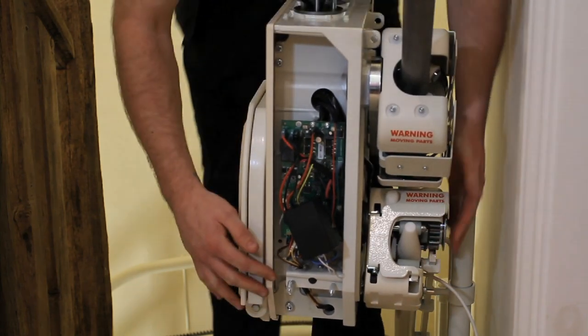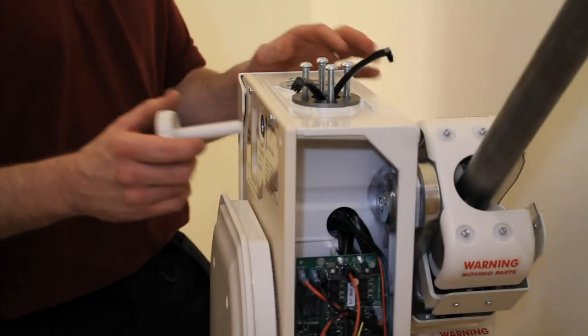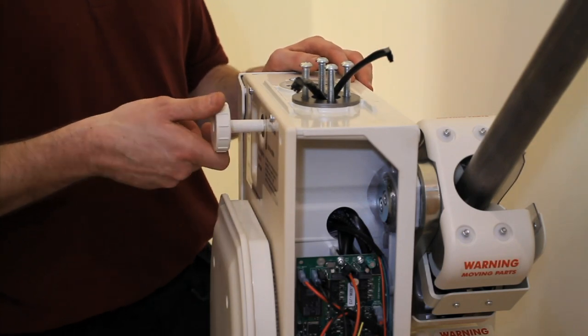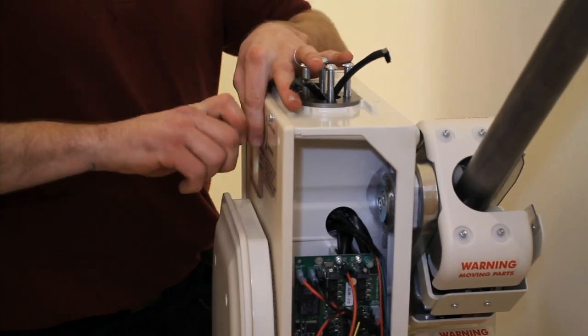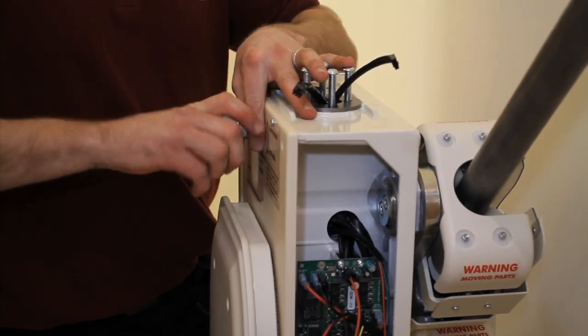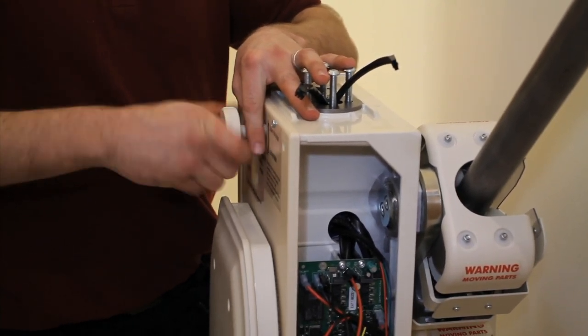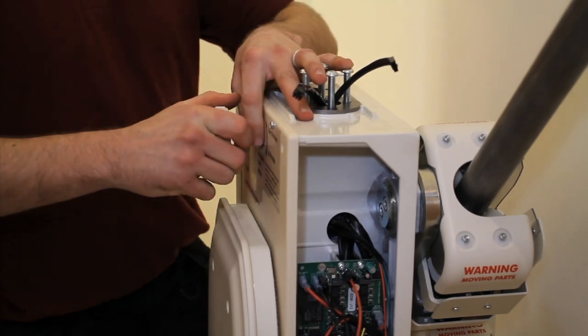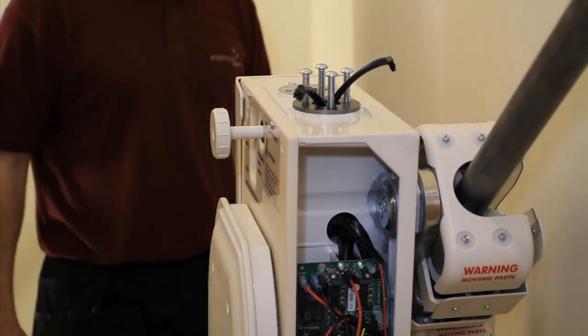Next you need to hand wind the carriage onto the rail correctly. Before you begin this, ensure the isolator switch is off. Insert the hand winder into the front of the carriage and turn until a loud click is heard. Hand wind the carriage down the rail for approximately 30mm or 1.5 inches.